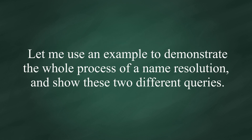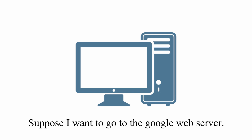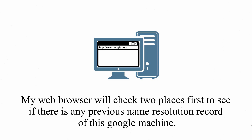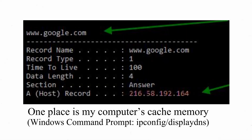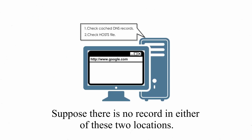Let me use an example to demonstrate the whole process of name resolution and these two different queries. Suppose I want to go to a Google web server. I type in www.google.com in my browser and hit enter. My web browser will check two places first to see if there's any previous name resolution record: one is my computer's cache memory, and the other is a simple text file called hosts. Suppose there's no record in either of these two locations.